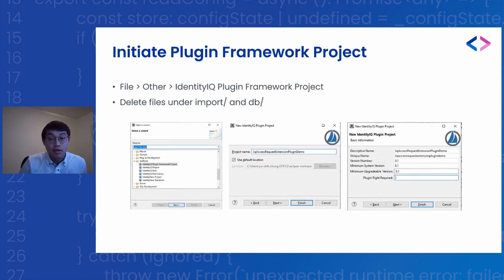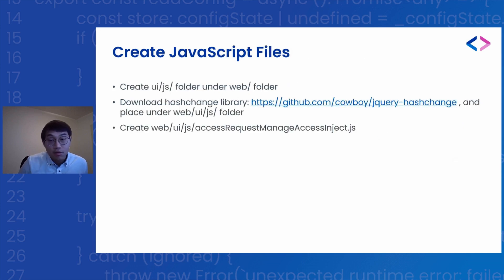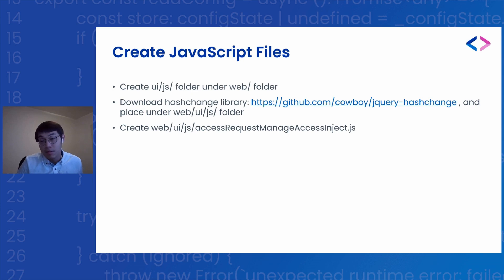Let's create the plugin framework and build project. As a shortcut, it's quite easy to use the IAQ DA Eclipse plugin. Using the wizard to create the plugin framework project in Eclipse. Then we will need to create subfolders under the web folder, and also download the hashchange library from the link provided and place it in the folder we just created. Then we create another JavaScript file under that folder. The name is not so important, but I will simply name it 'access request manage access inject.' You can name it as you wish, but configure exactly the same name in the manifest file.